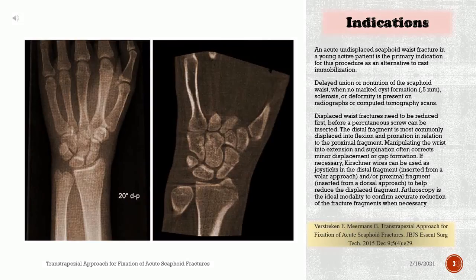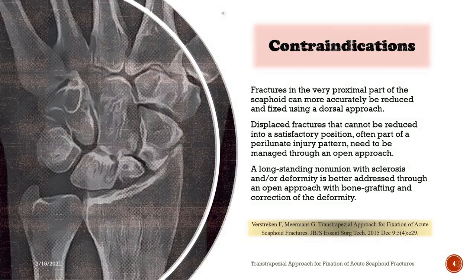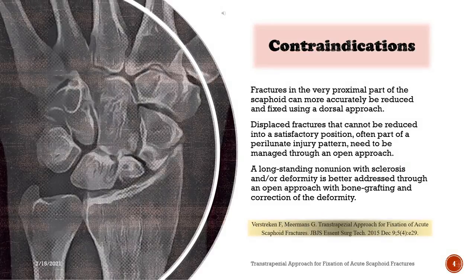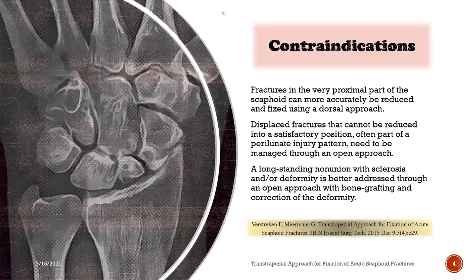Arthroscopy is the ideal modality to confirm accurate reduction of the fracture fragments when necessary. Fractures in the very proximal part of the scaphoid can more accurately be reduced and fixed using a dorsal approach. Displaced fractures that cannot be reduced into a satisfactory position, often part of a perilunate injury pattern, need to be managed through an open approach. A long-standing nonunion with sclerosis and or deformity is better addressed through an open approach with bone grafting and correction of the deformity.